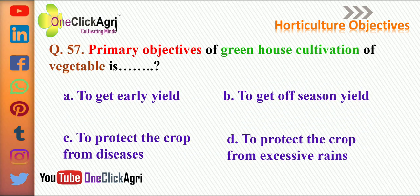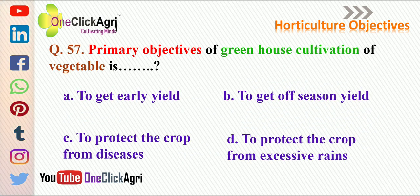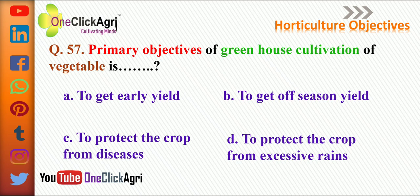Next question: the primary objective of greenhouse cultivation of vegetables is to get off-season yield. The rest of the options are also objectives of greenhouse cultivation: to get early yield, to protect the crop from diseases and pests, and to protect the crop from excessive rain and wind.